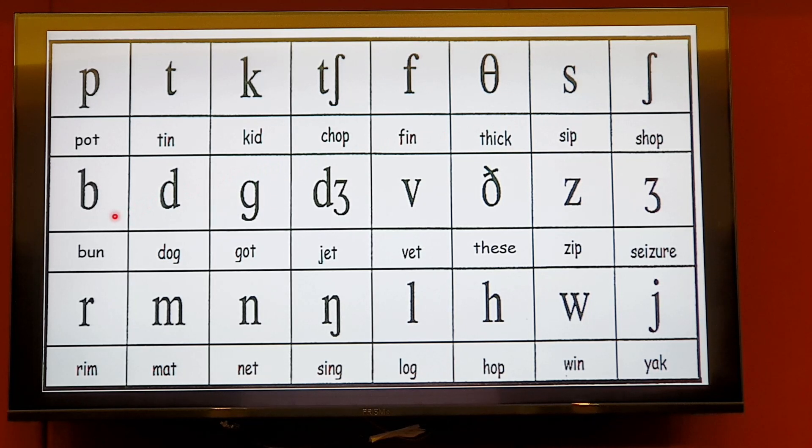B - ban. D - dog. G - got. J - jet. This is the international phonetic symbol for J.